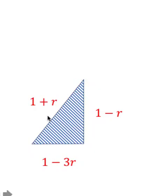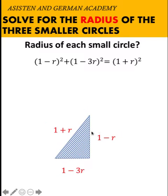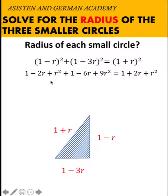We are now looking at this right triangle and we want to solve for the value of r. This is easier to solve using the Pythagorean formula. The square of the first leg is the quantity (1 minus r) squared. The square of the other leg is the quantity (1 minus 3r) squared. That equals the square of the hypotenuse, (1 plus r) squared. Expanding the binomials, the first three terms are the expansion of the first squared term, the next three terms are from the second, and the right side is the expansion of (1 plus r) squared.